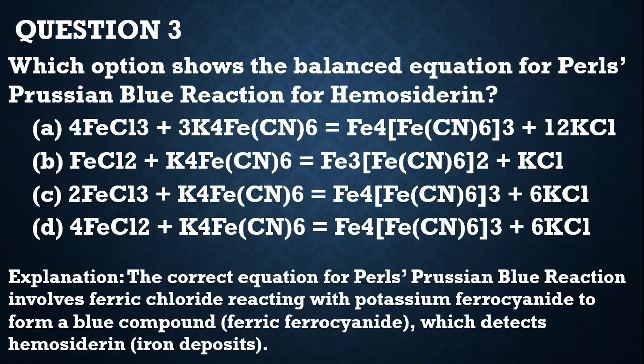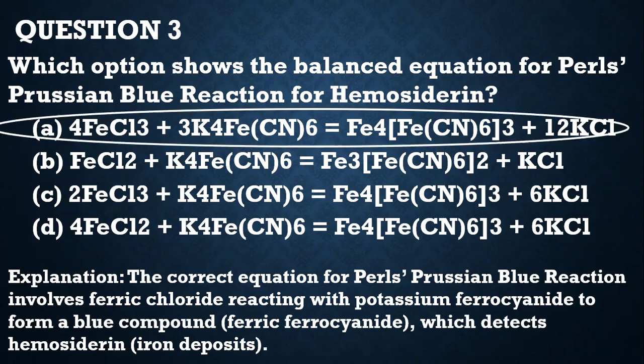Question 3. Which option shows the balanced equation for Perl's Prussian Blue reaction for hemosiderin? Your answer is A, because the correct equation involves ferric chloride reacting with potassium ferrocyanide to form a blue compound which detects hemosiderin — iron deposits.